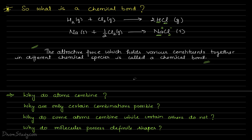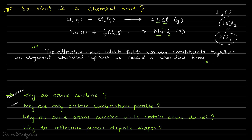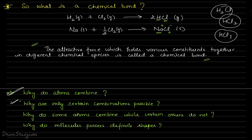Now the next question: we have defined chemical bonds as attractive forces — but why do atoms combine at all? What problem did hydrogen have existing alone? What problem did chlorine have? Why do atoms combine? And why are only certain combinations possible? Why HCl and not H2Cl, HCl2, or HCl3? Why don't they combine randomly in any way? And why do some atoms combine while certain others do not — like noble gases?